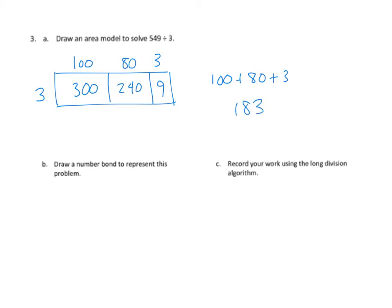Let's take a look at part B. Part B asks us to draw a number bond to represent this problem. Well, in the number bond problem, I'll do this in red here. We start with the whole, which is 549. We need to break it down into the pieces that are easily divisible by three. So we're going to do that the same way. How many hundreds would that be? Well, that would be about 300. We could break off 300 of those.